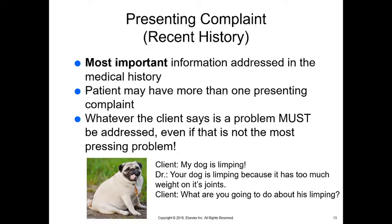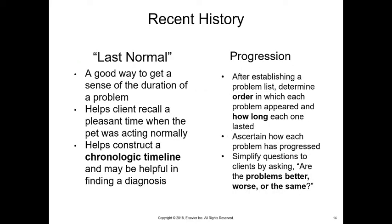The most important information is the presenting complaint — this is the recent history and what is bringing that patient in today. They may have more than one presenting complaint, but we have to address whatever the client says is the problem. For instance, a chunky pug comes in limping — the doctor may know the limping relates to excess weight, but the client wants to know what you're going to do about the limping right now. We have to address that presenting issue first, and then get to the underlying cause.